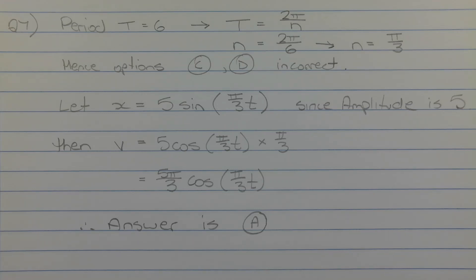Let's consider the period of motion. The period is given as 6, represented by capital T. The formula relating the period with the coefficient of the time variable t is T equals 2π over n. Since T equals 6, solving 6 equals 2π over n for n gives n equals 2π over 6, which simplifies to π over 3.